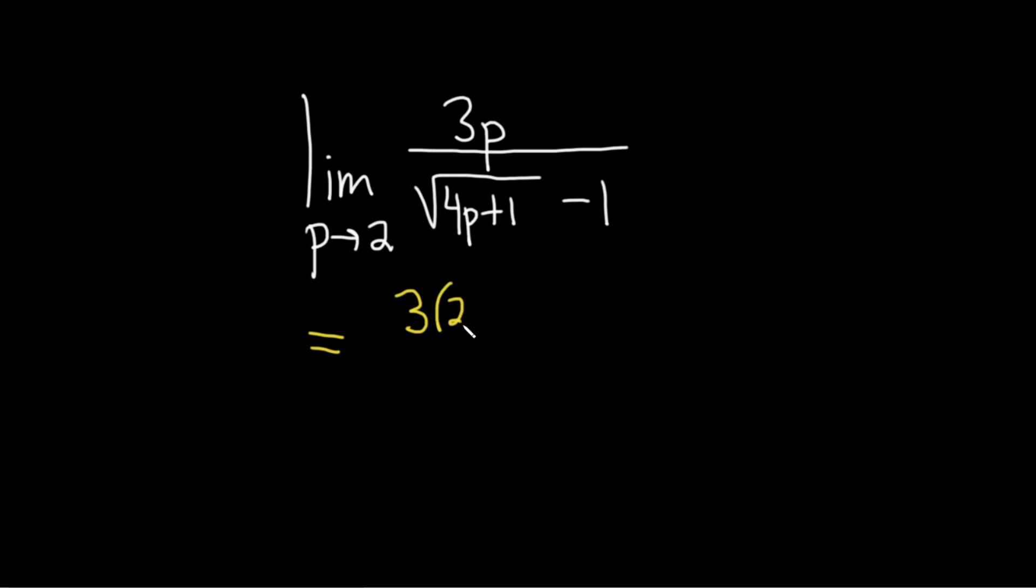So 3 times 2 divided by, then here we have the square root of 4 times 2 plus 1. Then here we have the minus 1.